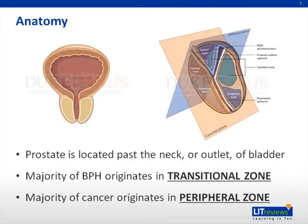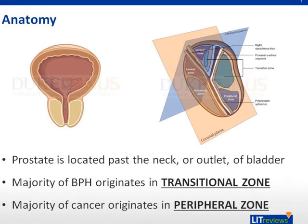The prostate is located deep within the male pelvis. It sits just past the outlet of the urinary bladder. The urethra also originates in this area and travels through the prostate. So as you can see, during voiding, urine is essentially squeezed through the prostate.